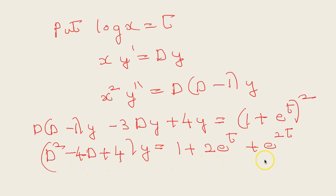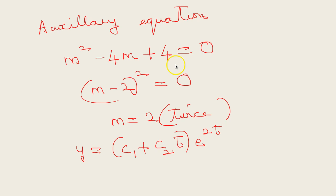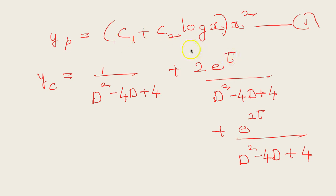The auxiliary equation is m² − 4m + 4 = 0, giving (m − 2)² = 0, so m = 2 (repeated root). As explained in an earlier video, when a root is repeated the complementary function is (c₁ + c₂t)e^(2t). Substituting back t = log x and e^t = x, the complementary function yc = (c₁ + c₂ log x)x².